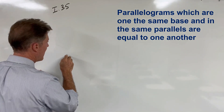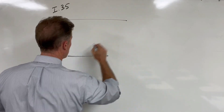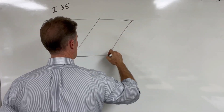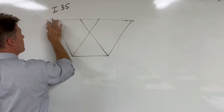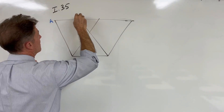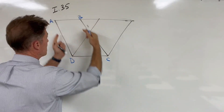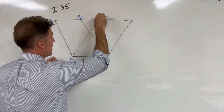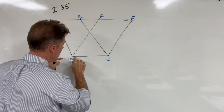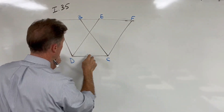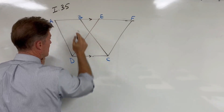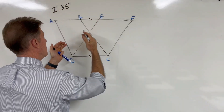Our given is that we have two parallelograms that are on the same base and contained by the same parallels. We look at parallelogram ABCD and parallelogram DEFC. They are on the same base DC and contained within the same parallel lines. We want to prove therefore that they are equal to each other.